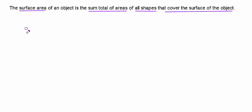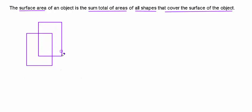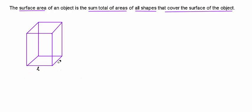Let's talk about a rectangular prism that has got two rectangles on two sides such that the planes of the two rectangles are parallel to each other and they are connected by rectangular faces. So this is what you call a rectangular prism. Let's say the length of the prism is L, the width is W, and the height of the prism is H.